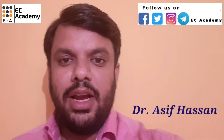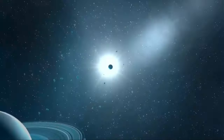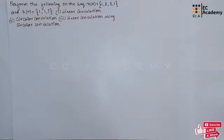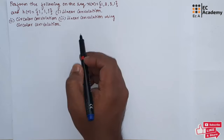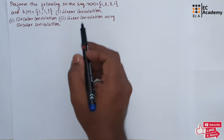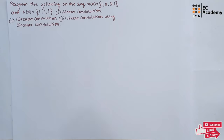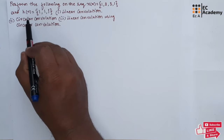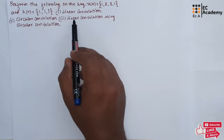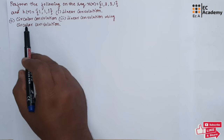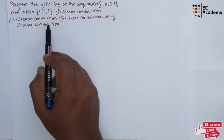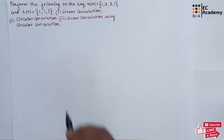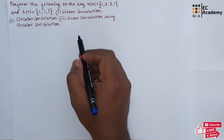Hello friends, welcome to EC Academy. In this lecture, let us understand the problem on circular convolution and linear convolution. Here they have given the sequence x of n and h of n, and we need to perform linear convolution, then circular convolution, and linear convolution using circular convolution. These type of problems are very important in the exam.